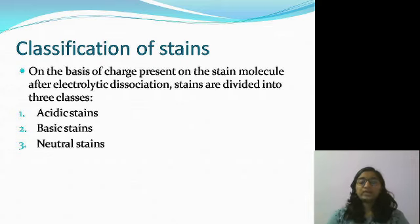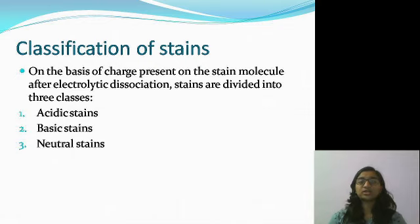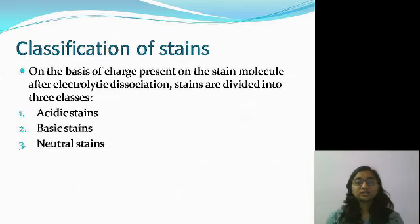Hello everyone, we have started unit one that is Stains and Dyes from paper number two. In this unit, we have discussed so far about the concept of stain and dye, the difference between stain and dye, some examples, and after that the chemical structure of stains. We have seen that a stain has three components: the chromophore group, auxochrome group, and benzene ring. Then we discussed what chromophore and auxochrome are, their properties, and how they impart color to a stain.